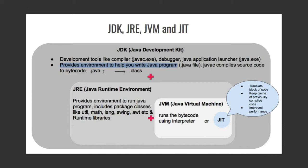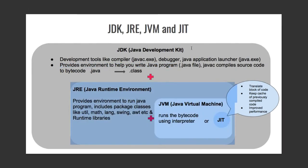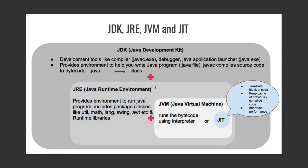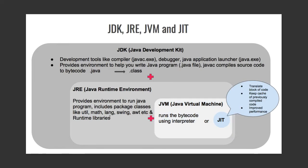In the end you get a .class file from your .java file. Just as JDK is a superset of JRE, JRE is a superset of JVM. It includes JVM — Java Virtual Machine — plus package classes like util, math, lang, etc., and runtime libraries. The Java command starts a Java application by starting JRE, loading its specified classes, and calling its main method.